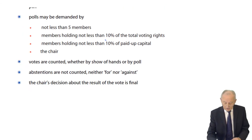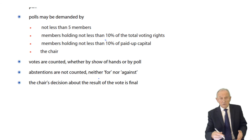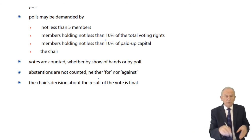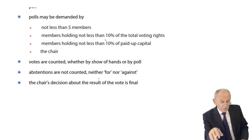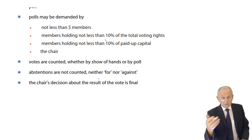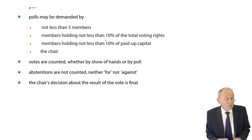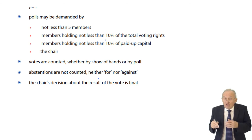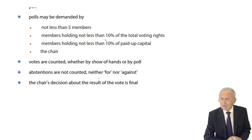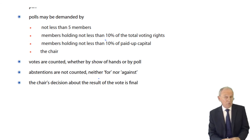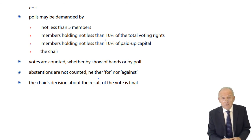Votes are counted whether by show of hands or by poll. Abstentions are not counted — if you don't vote, you're not counted, and a proxy instructed to abstain is also not counted. The chair's decision about the result of the vote is final. The results must be published on the company's website — the number of votes cast in favour of each resolution, the number against, and the number of abstentions. You should look at a company's website to see the notice of a general meeting and the results of the resolutions proposed.